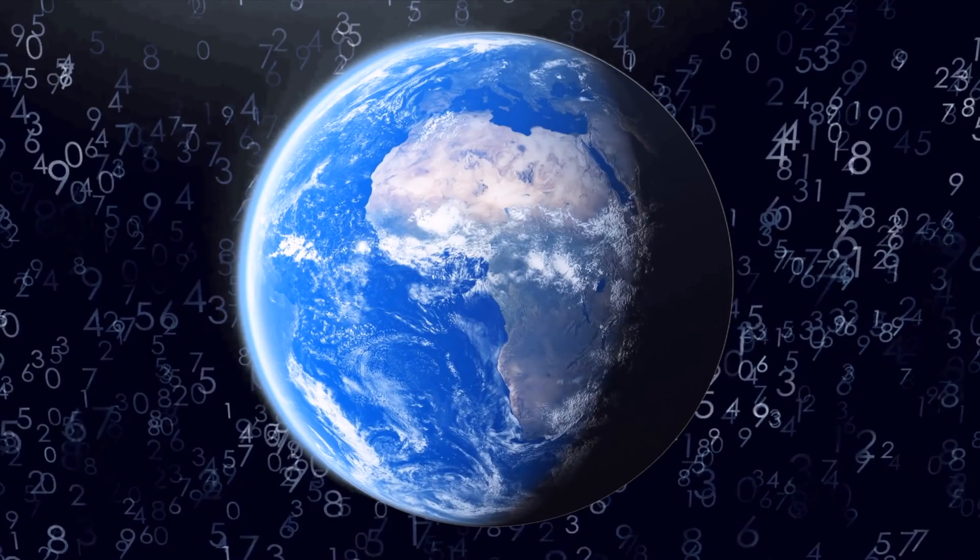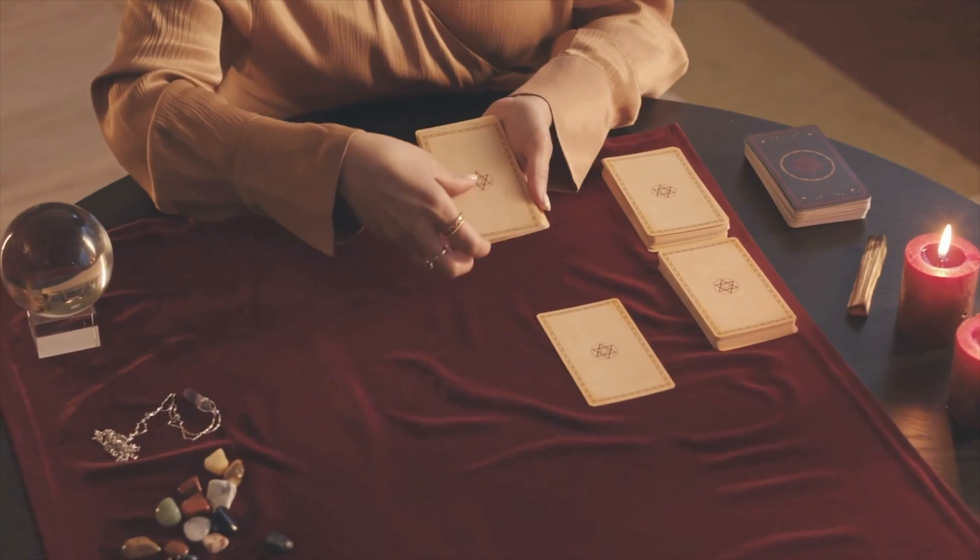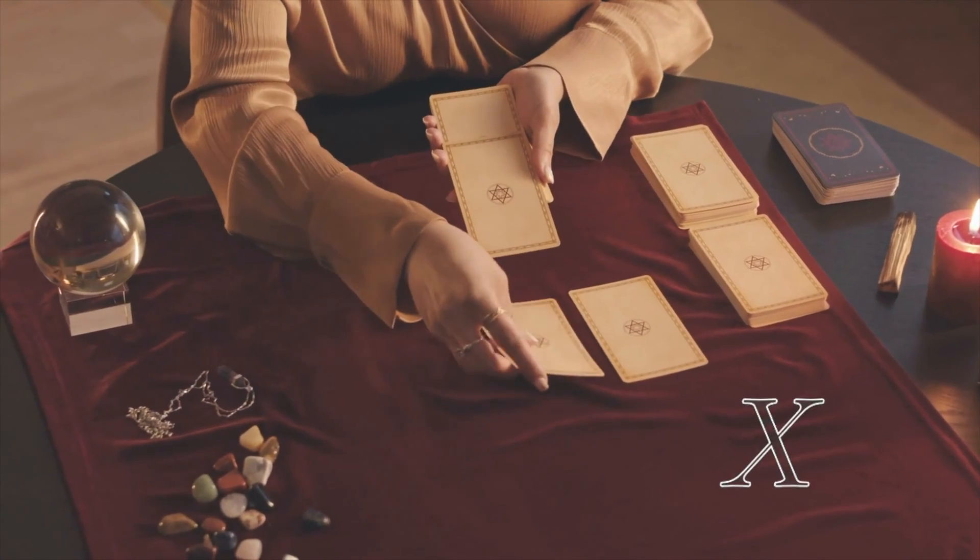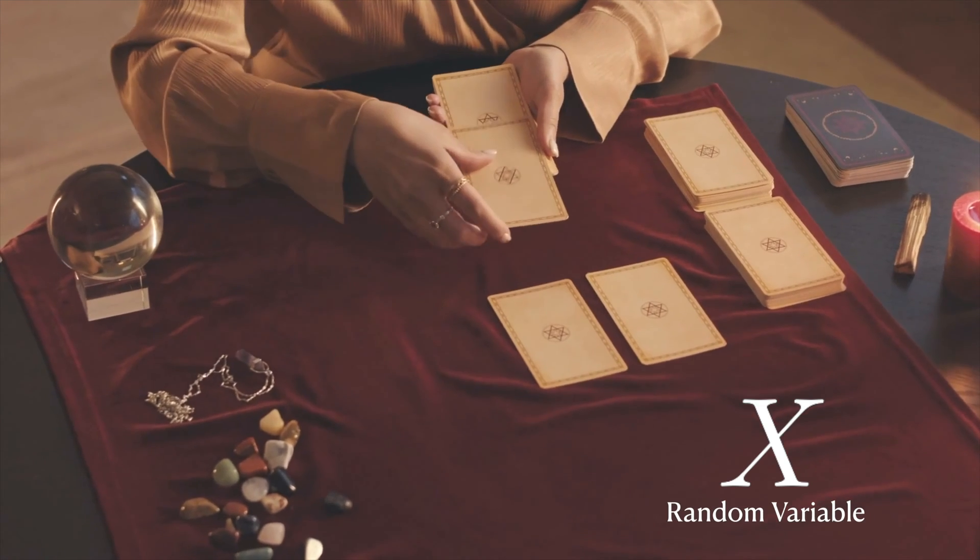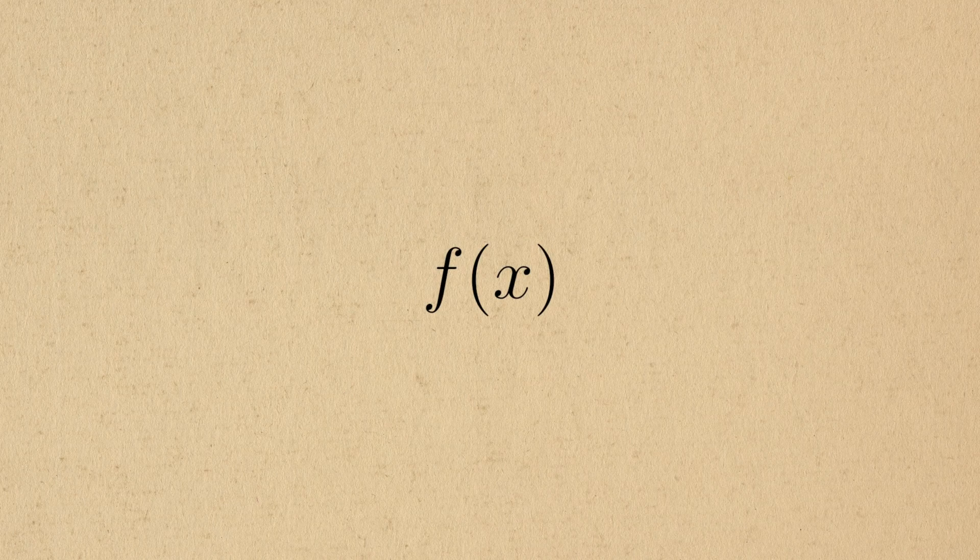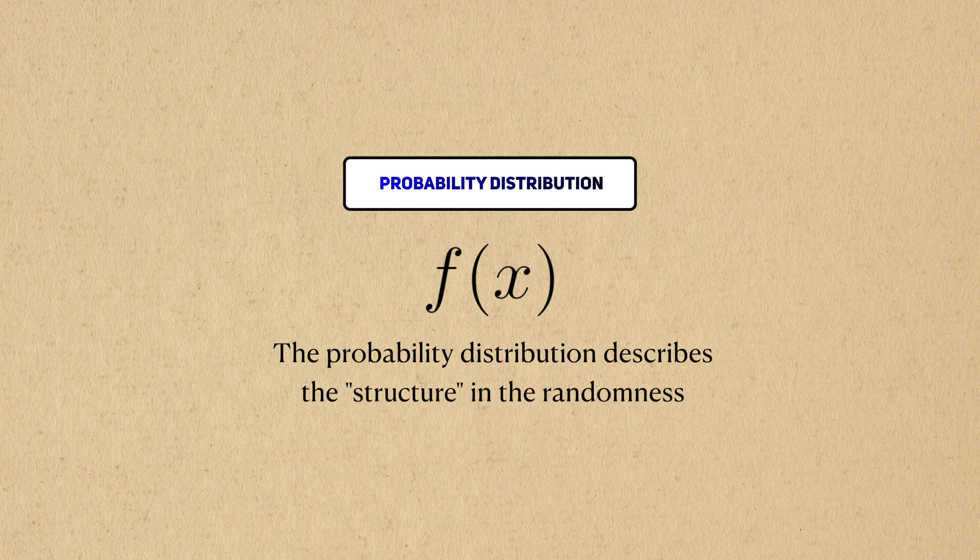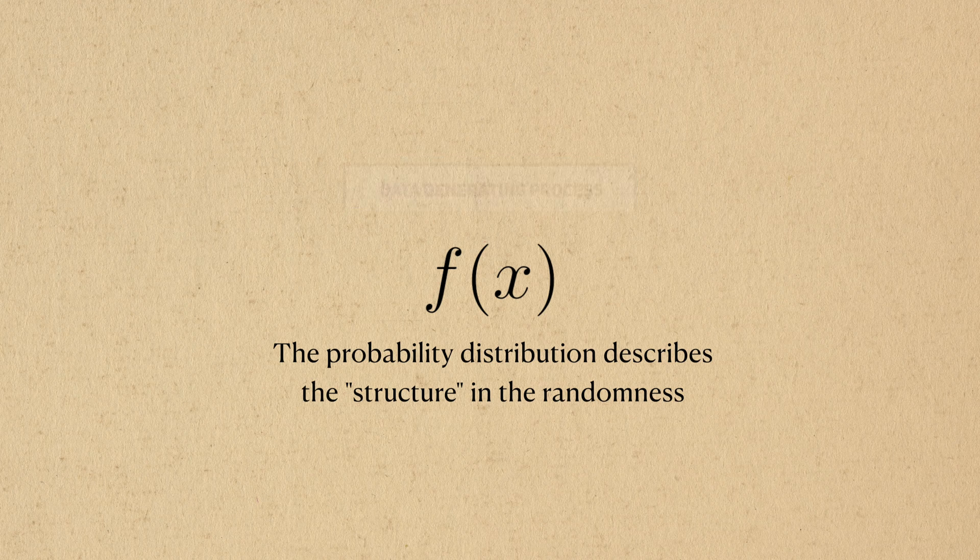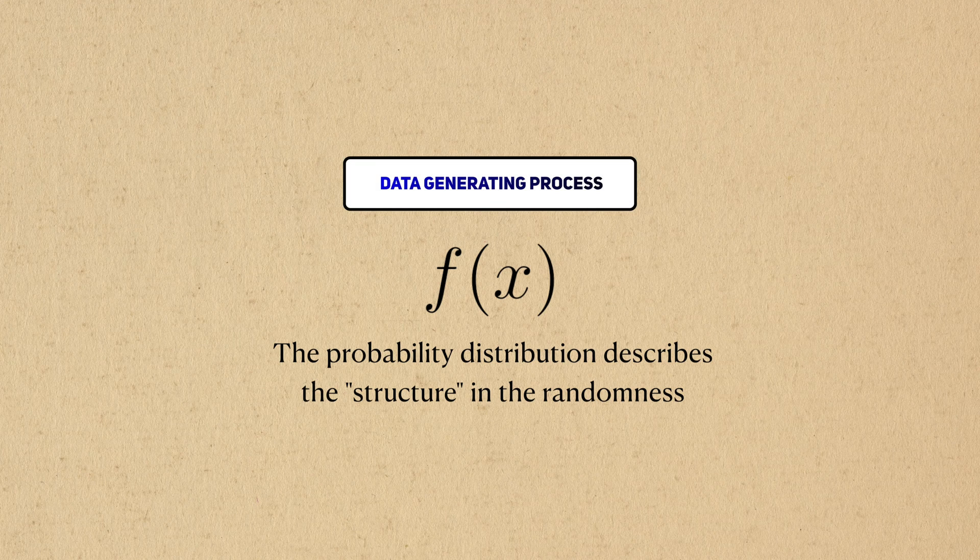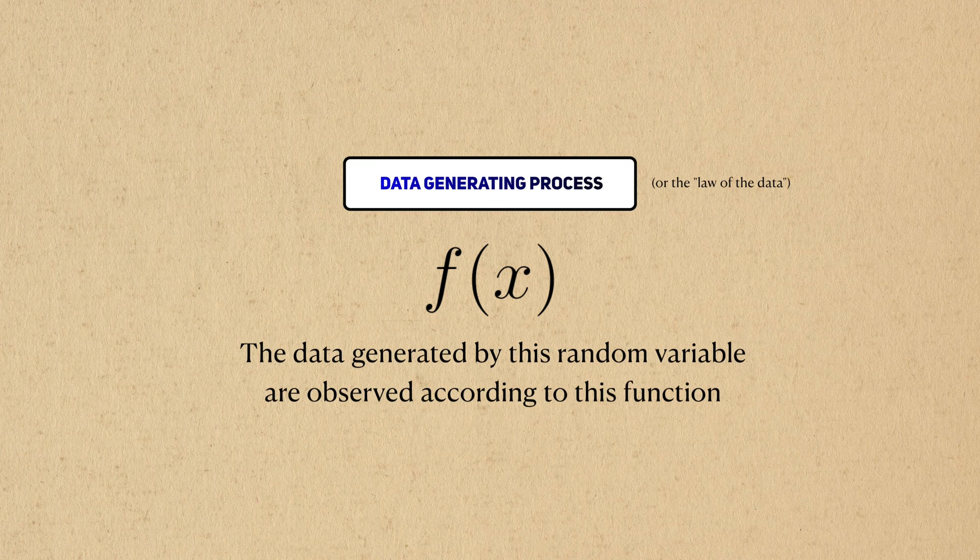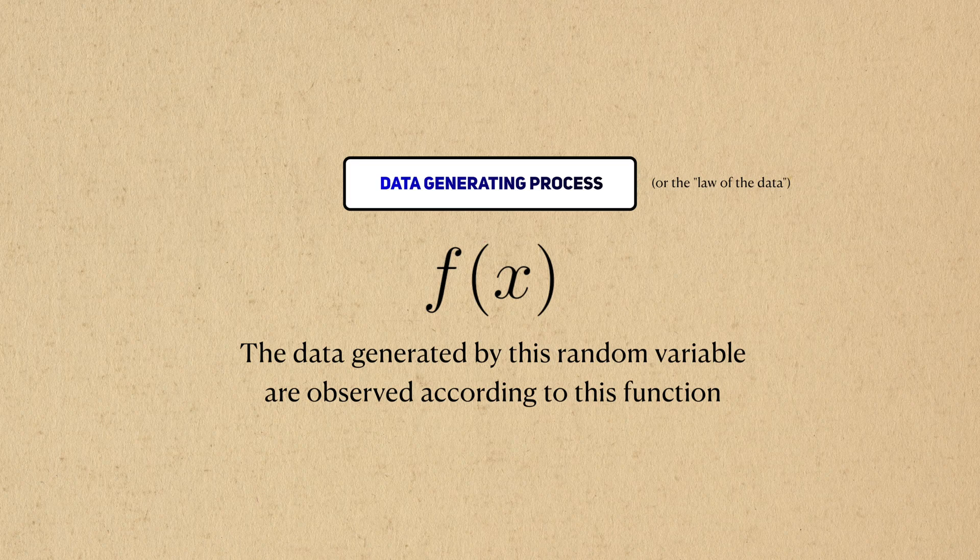We observe data in the real world. We can't predict what values these data will take ahead of time, so we convey this idea in the form of a random variable. Despite this randomness, if we know the probability distribution, then we'll know the relative frequency that will observe different values. Probability distributions are also known as the data-generating process, or the law of the data, since the randomness in the data adhere to this function.